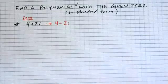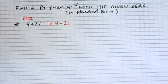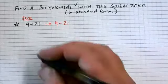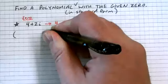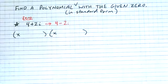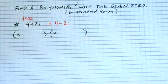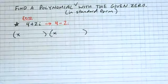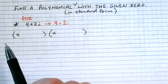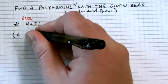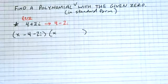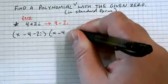So then we could write a couple of factors for this. And if we're looking for standard form, we're going to have to multiply those factors together. Let's go ahead and write our factors. So what would be my factor for 4 plus 2i? It would be x minus 4 minus 2i, and then x minus 4 plus 2i.